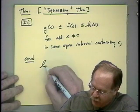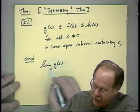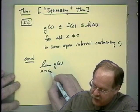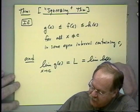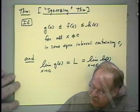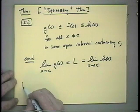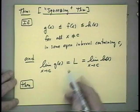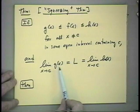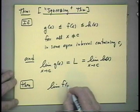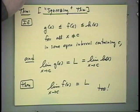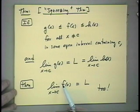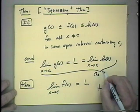Here is the second hypothesis: I also assume that the limit of g(x) as x approaches c equals some number L, and that is also the limit of h(x) as x approaches c. So those two limits are the same. Then, since f(x) is caught between these two functions everywhere and they have the same limit at c, the limit of f(x) as x approaches c also equals L. That is the squeezing theorem.